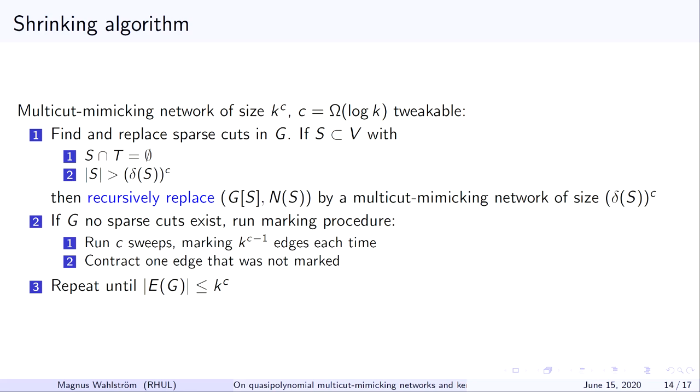Second step, assuming that G contains no sparse cut of this type, then we are allowed to run a marking procedure, which I will describe in the next couple of slides. Its correctness guarantee depends on the graph being at least dense enough that step 2 is reached. We will run C different sweeps, and in each sweep we have a different representative set construction. Afterwards, if there is any edge which was not marked in any of the sweeps, we can contract that one edge and start off at step 1 until we have our mimicking network.